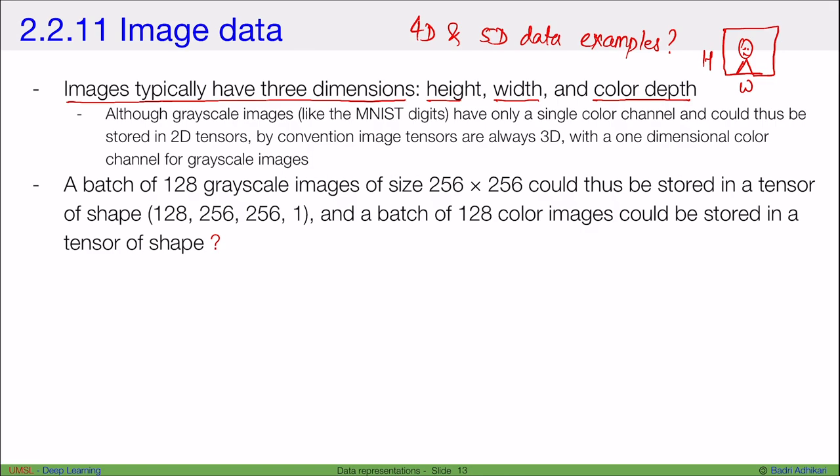But like I said before, only grayscale images have two dimensions, because each pixel is intensity of how dark or how light the pixel should be. But in case of color images, we actually need to maintain three different channels, three different matrices. The first one usually for red, the second one for green, and the third one for blue. So for this reason, images are three-dimensional tensors or three-dimensional matrices.